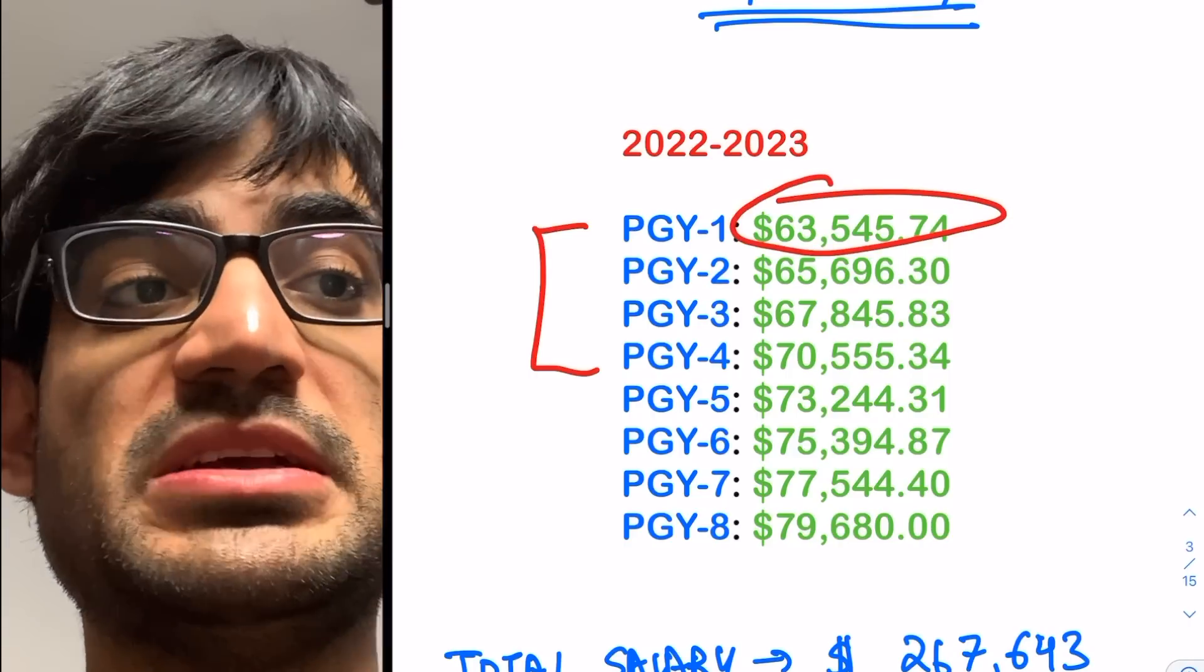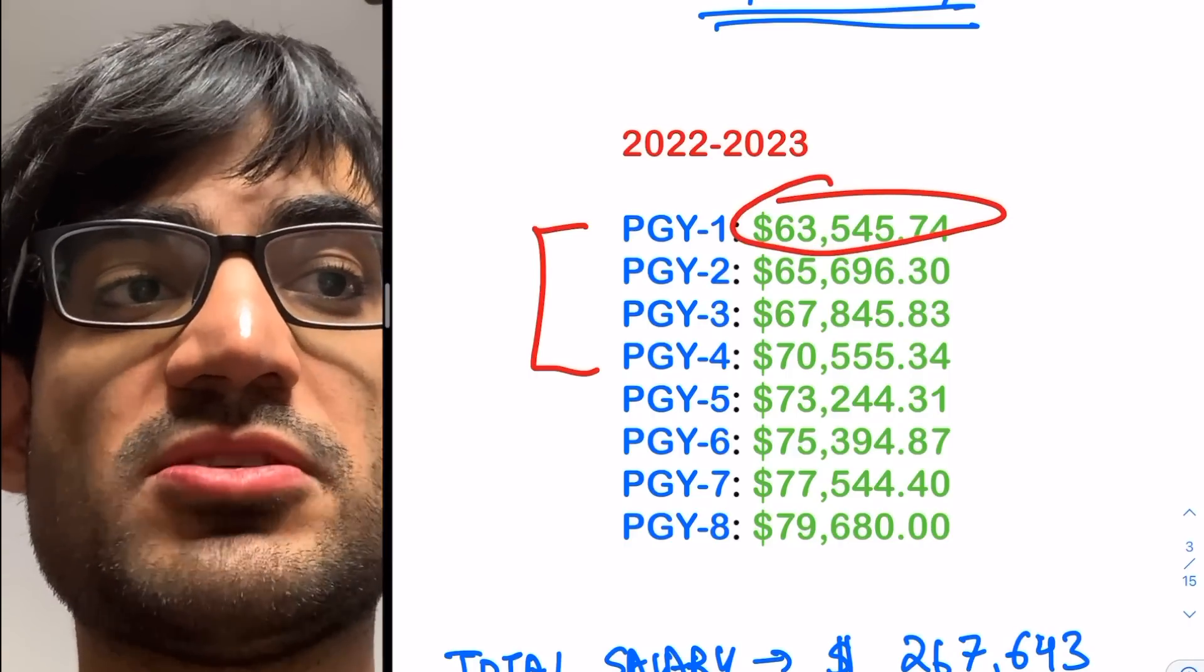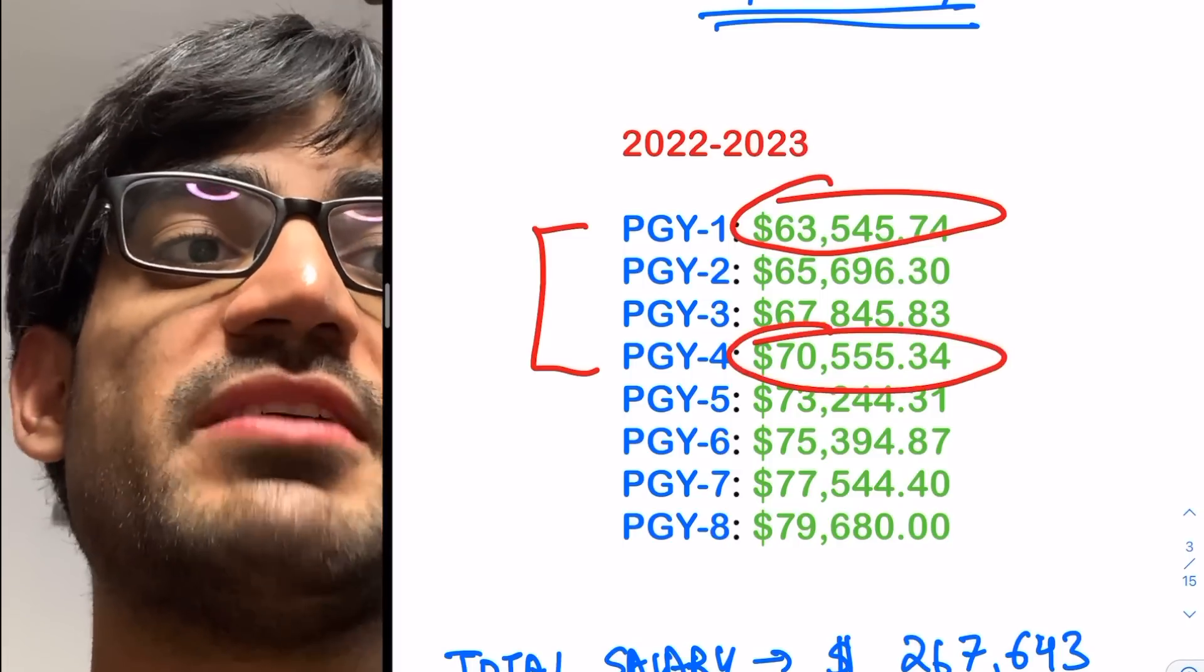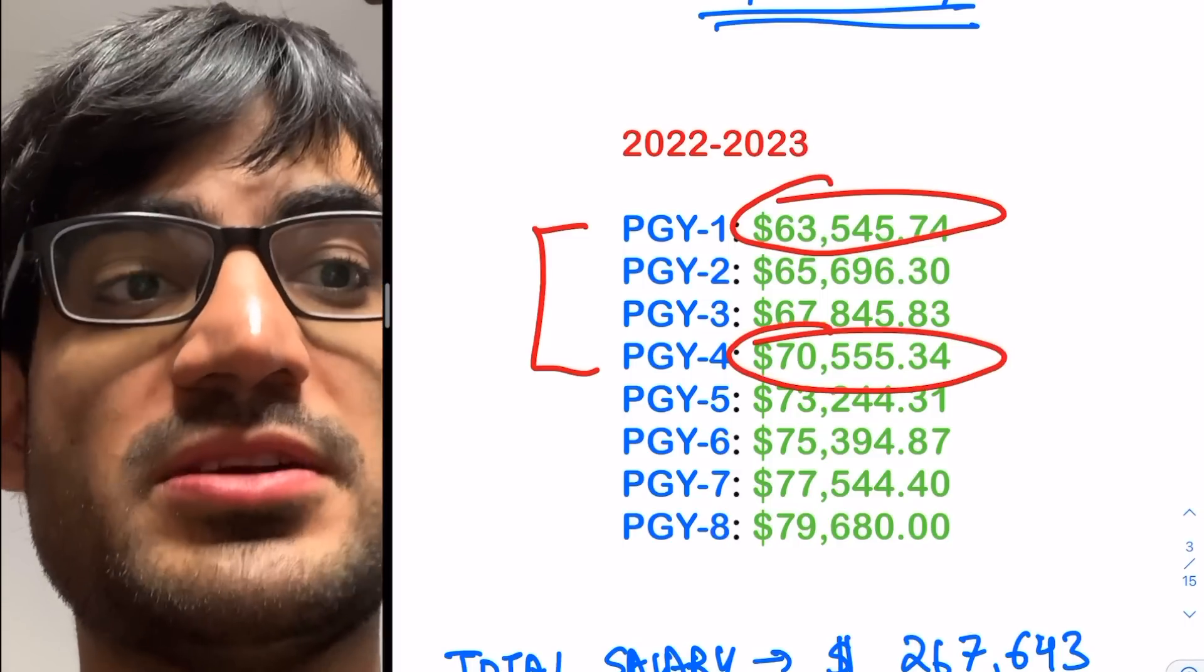And then in PGY 2, it will become about $66,000. And in PGY 3, I'll be making $68,000. And PGY 4, I'll be making about $71,000.